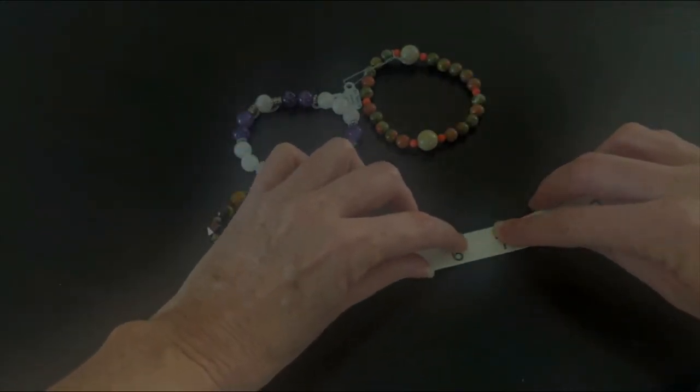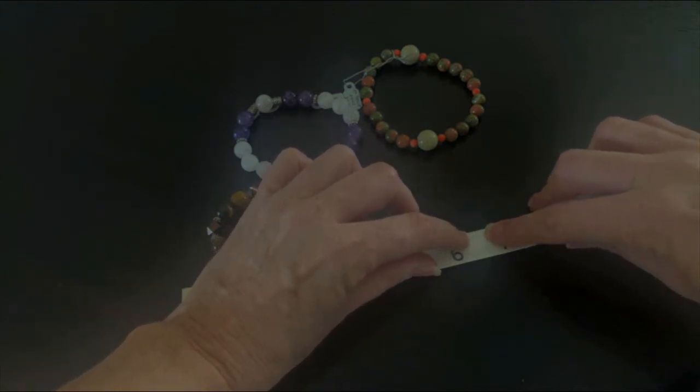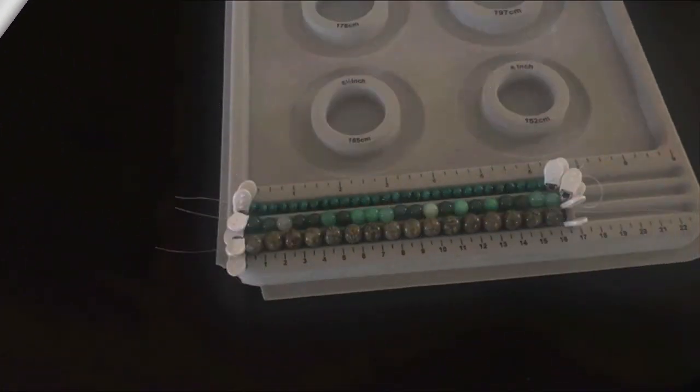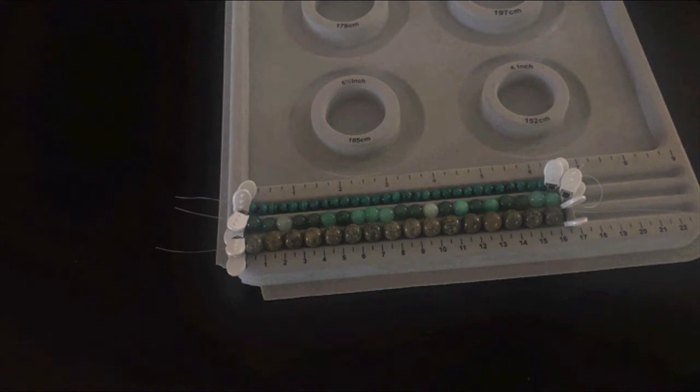For me, I like mine a little bit tighter so I'm going to stay within that one quarter range. You may find it's more comfortable for you to have it a little bit looser. Once you have the size of your wrist and perhaps you've added that one quarter to one half inches to fit your wrist comfortably, we want to think about the size of your beads.